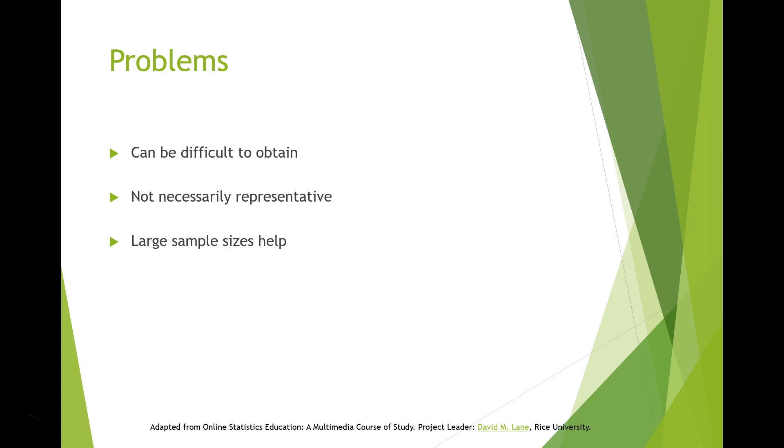Recall that the definition of a random sample is a sample in which every member of the population has an equal chance of being selected. This means that the sampling procedure, rather than the results of the sampling procedure, defines what it means for a sample to be random.